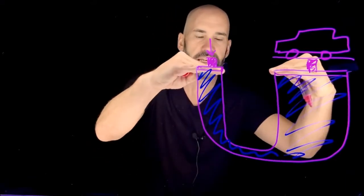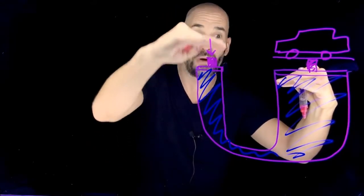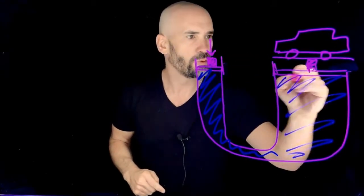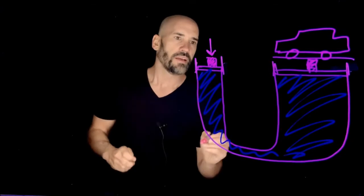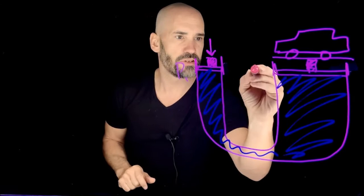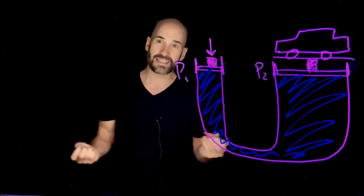And if these guys are stable, in other words, if this isn't falling down or rising up, and this isn't falling down or rising up here, imagine there's like a little room for this to move. So if these are stable, that means that the pressure here, we'll call that P1, and the pressure here, P2, they must be the same.